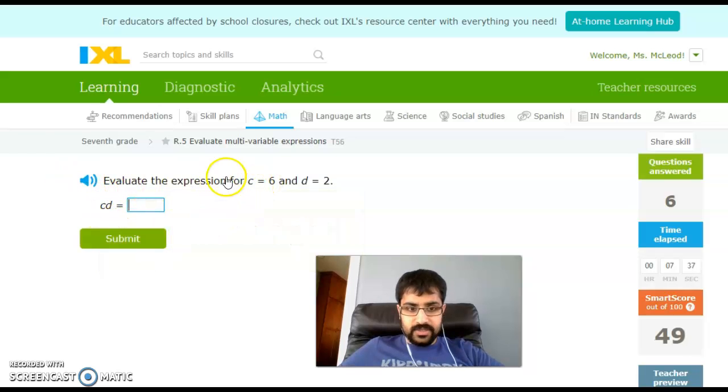Another multiplication because they're next to each other like this, and I'm evaluating for c is 6 and d is 2, so I take 6 times 2 and I get 12.